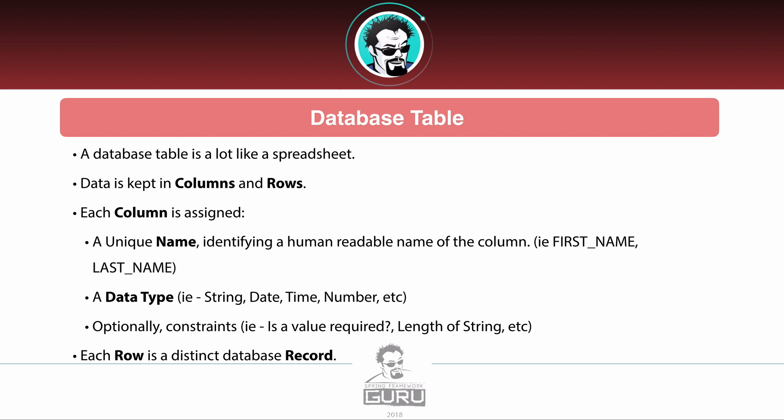There are also constraints that we can place on a column. These are not mandatory, but we can say a value is required — this is known as a null check, null being nothing — so we can require that the column must have a value assigned when creating a database record. We can also specify the length of a string; for example, first name can be up to 50 characters. Other constraints will be covered in upcoming lectures.